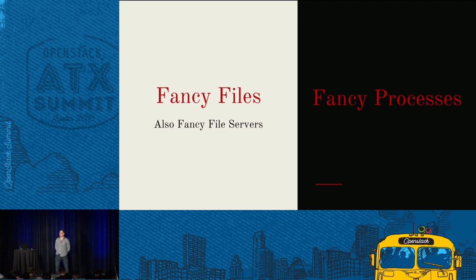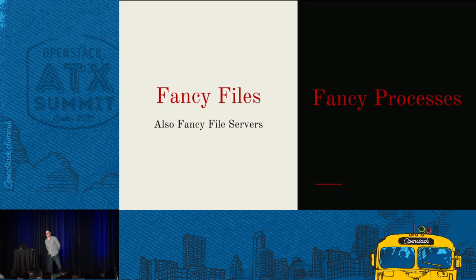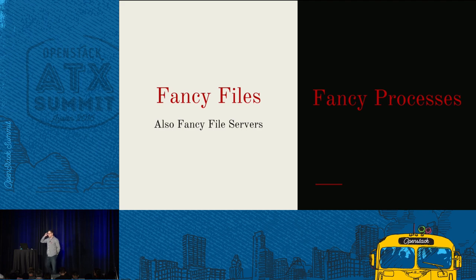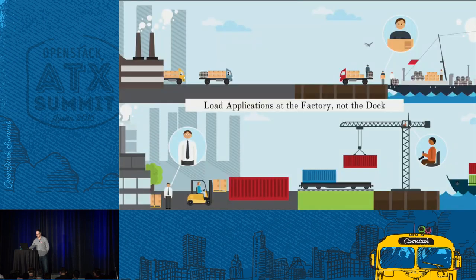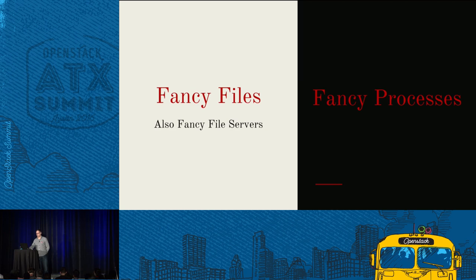Instead of a fork system call or exec, you're just using a clone system call. This clone call creates a virtual set of data structures in the kernel consumed inside that process, so the process thinks it's running in its own operating system but it's not. On disk it's multiple files packaged in Docker format. The real magic of Docker was the push — docker push — because you can pull down any format but having layers and an actual protocol in the registry server is what makes it a fancy file server.